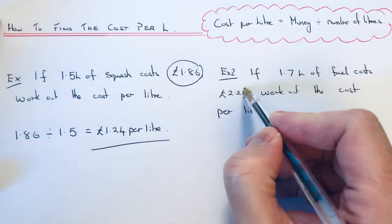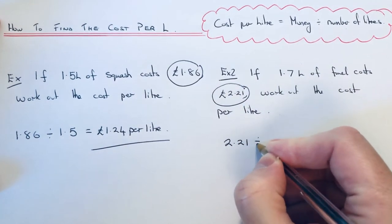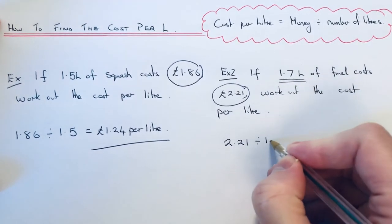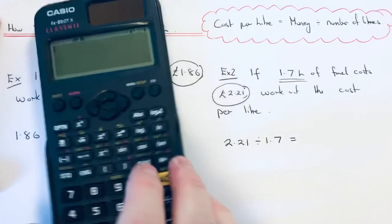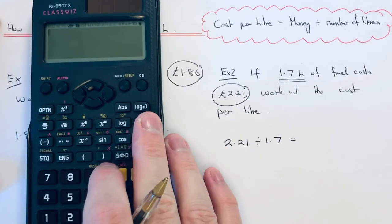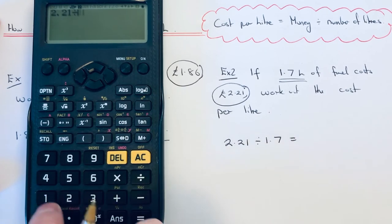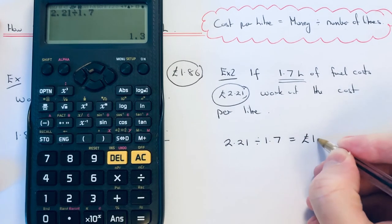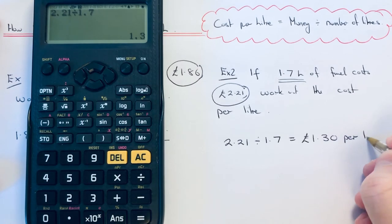Again we just need to write down the money first which is £2.21. We are buying 1.7 litres, so if we divide that by 1.7, put that on the calculator. £2.21 divided by 1.7 gives an answer of £1.30 per litre.